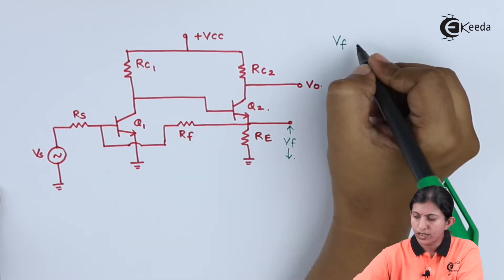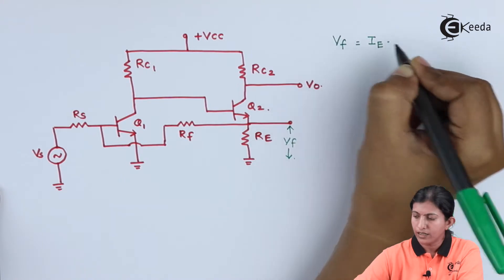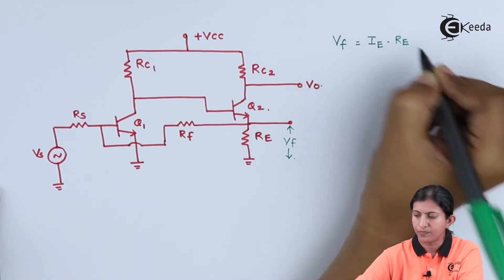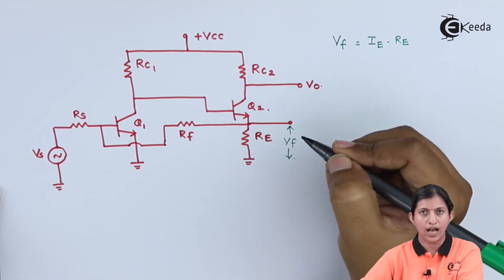As it is a voltage drop, it is I times R. So it is Ie times Re, where Ie is the emitter current flowing through resistor Re.